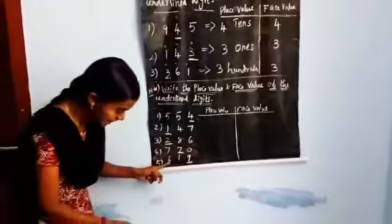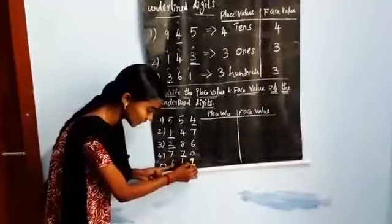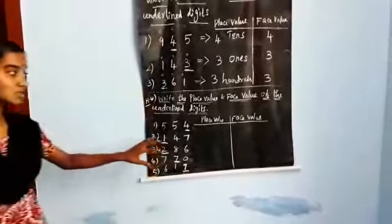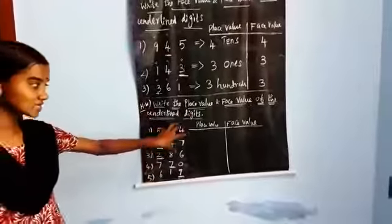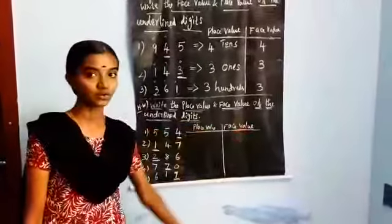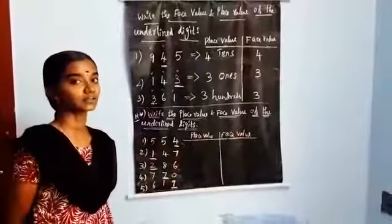Fifth sum: 619 — 9 is underlined. You have to write the place value and face value. Do it as your homework now, children. Thank you.